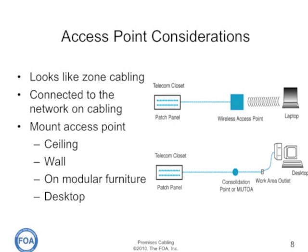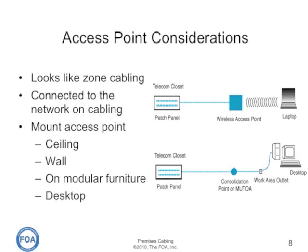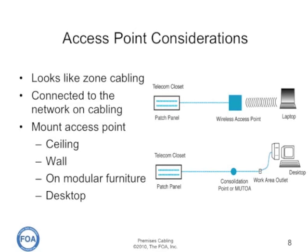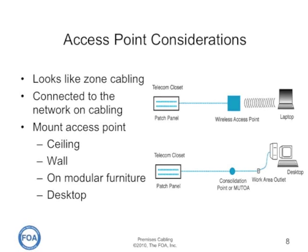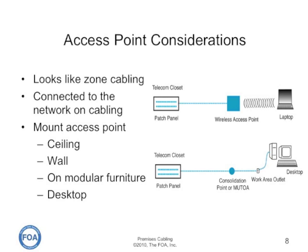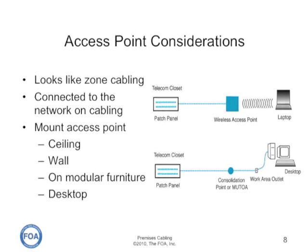Another way to look at a wireless access point is that it's very similar to zone cabling in a normal copper structured cabling network, where instead of a consolidation point that goes out to the desktop, we have a wireless access point that goes out to a wireless device, and the wireless link replaces the standard patch cord.